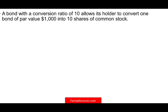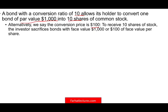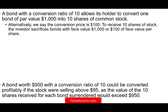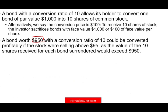A bond with a conversion ratio of 10 allows the bondholder to convert one bond with face value $1,000 into 10 shares of stock. The implied conversion price is $100 per share. So a bond worth $950 with a conversion ratio of 10 means you are buying each stock for $95, because you paid $950 and can convert it into 10 stocks — so you are paying $95 per share.